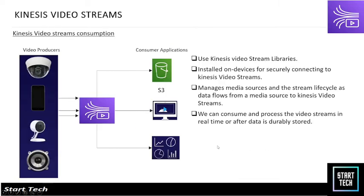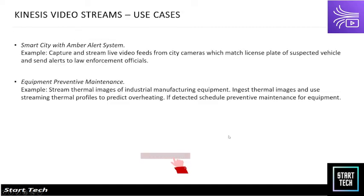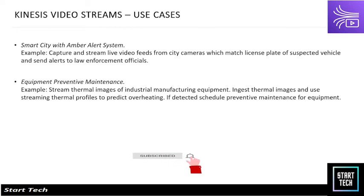Video producers can be Amazon devices, web cameras, or mobile cameras. Video is ingested via Kinesis Video Stream, stored in S3, and a dashboard can be built to check metrics from the video streams. Use cases include smart city traffic monitoring, and preventive maintenance in a warehouse using thermal image processing to detect overheating.